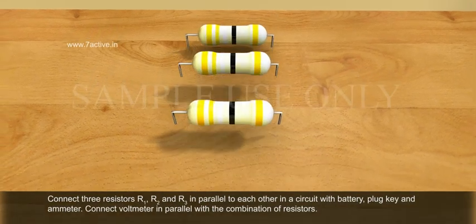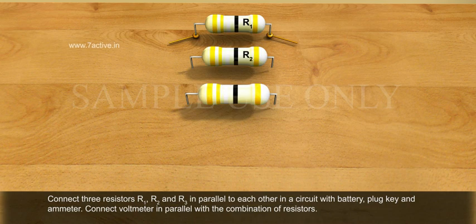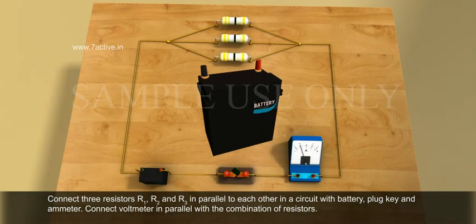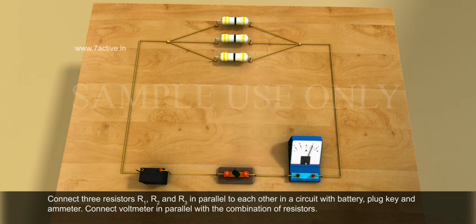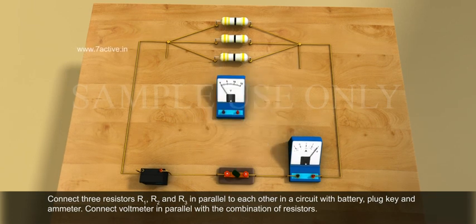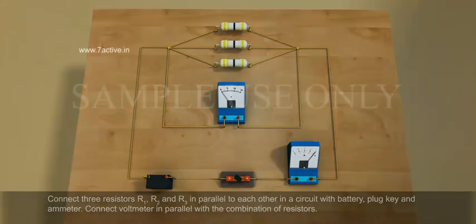Connect three resistors R1, R2, and R3 in parallel to each other in a circuit with battery, plug key, and ammeter. Connect the voltmeter in parallel with the combination of resistors.